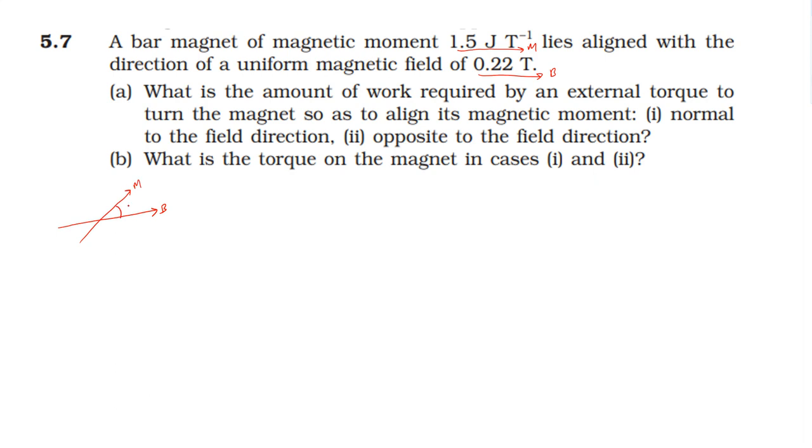Potential energy is equal to minus m into B into cos theta. What is the power between B and m state and m loop?